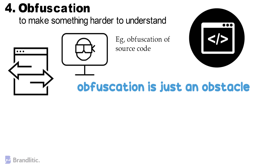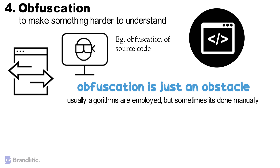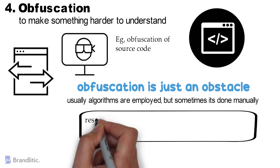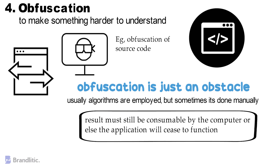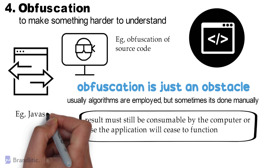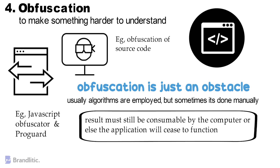Sometimes it is simply a manual process that takes time to work through. Another key thing to realize about obfuscation is the limitation on how obscured the code can become, which also depends on the content being obscured. If you are obscuring computer code, for example, the limitation is that the result must still be consumable by computers, or else the application will cease to function. Examples of obfuscation tools include JavaScript Obfuscator and ProGuard.